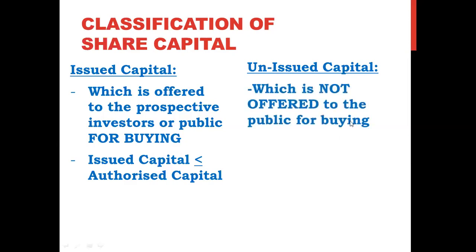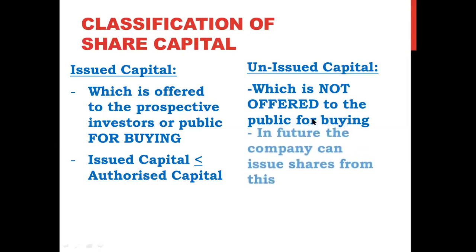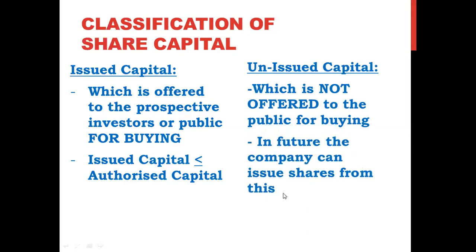Unissued capital is that part of authorized capital which is not offered to the public for buying. The name itself is self-explanatory. But in the future, the company can issue shares from this unissued portion. For example, if you have only issued 80,000 shares out of 1 lakh, you still have 20,000 shares pending — those pending shares are called unissued capital. For the numerical explanation of issued and unissued, we will call the Boss himself to explain.